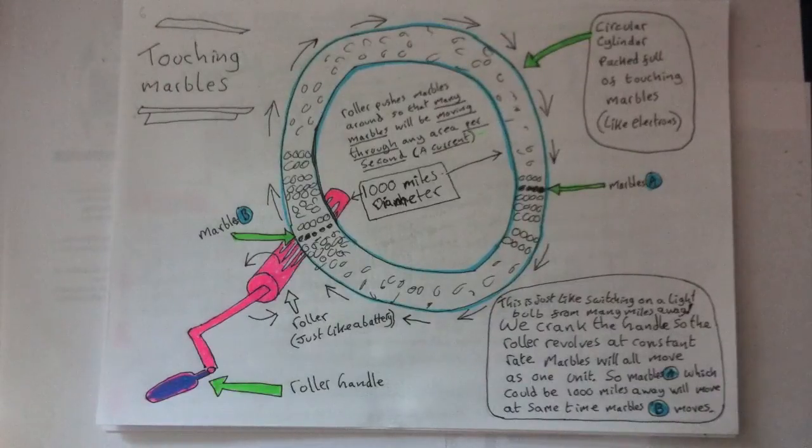We will always make sure that our roller maintains a steady marble current, for example say five marbles per second. By turning the roller's handle at a constant rate of revolutions, this roller will keep on moving the touching marbles around all the while it is touching the side of the marbles that get rolled by it. So this means when one marble is moved, they all will move at the exact same moment in time and at the same marble flow rate or marble current.